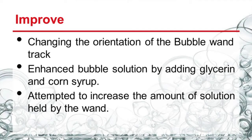Another step in the engineering design cycle is to improve on previous designs. Our first improvement was made on the bubble wand track — in the horizontal position, there was much solution falling into the gears causing gear slip. So we flipped the track to a vertical position, preventing the solution from falling into the gears and stopping the gear slip.